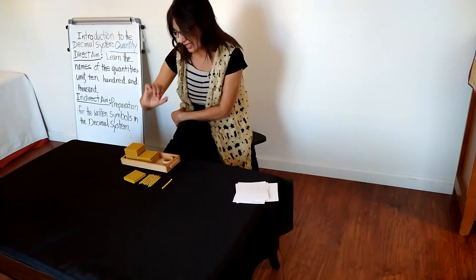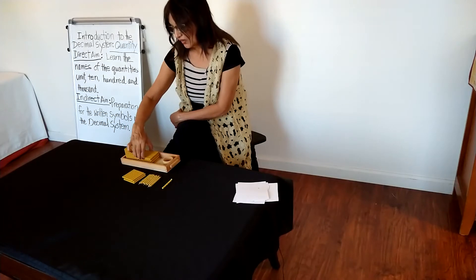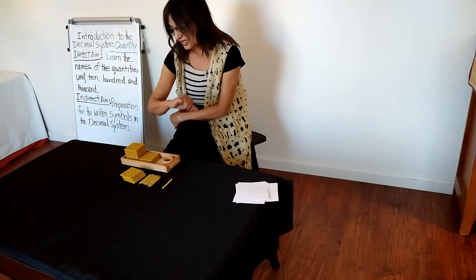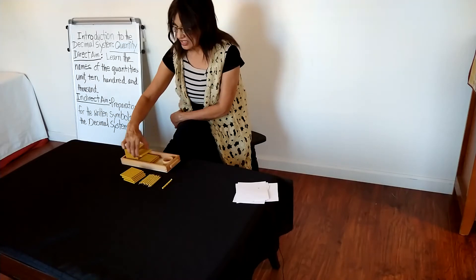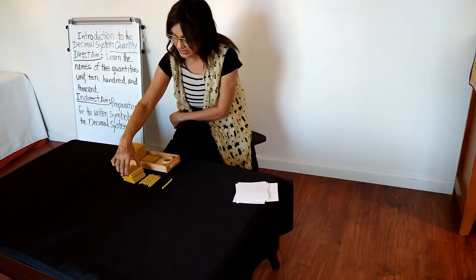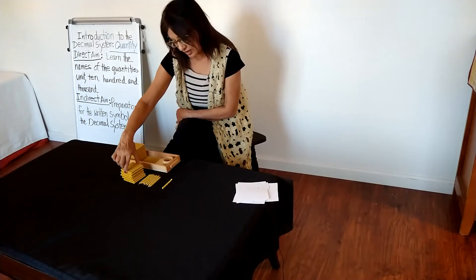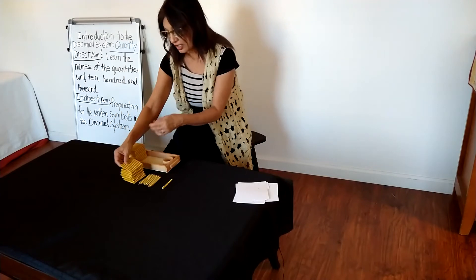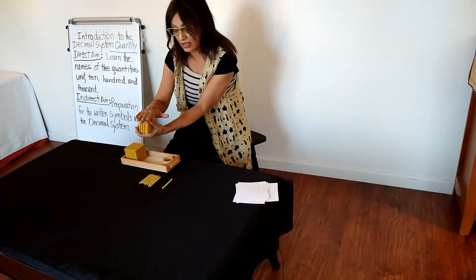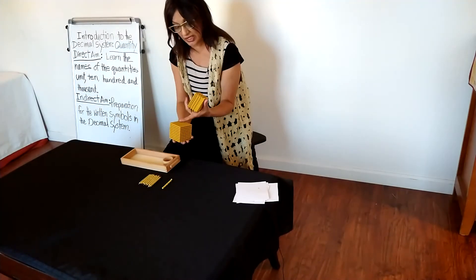Counting by hundreds: 100, 200, 300, 400, 500, 600, 700, 800, 900 — 10 hundreds. 10 hundreds make 1000.